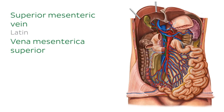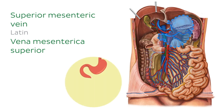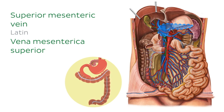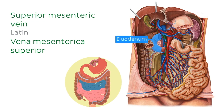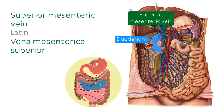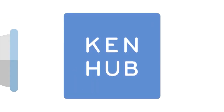Next up is the superior mesenteric vein, highlighted in green. The stomach located in the upper left quadrant, the transverse and descending colon, as well as the pancreas have been cut out of this picture, and you can see the c-shaped duodenum here. On top of that we have the superior mesenteric vein. Embryologically, the superior mesenteric vein forms to drain the midgut. The midgut starts at the ampulla of Vater and ends two thirds of the way along the transverse colon, so all of the parts in between drain to the superior mesenteric vein.